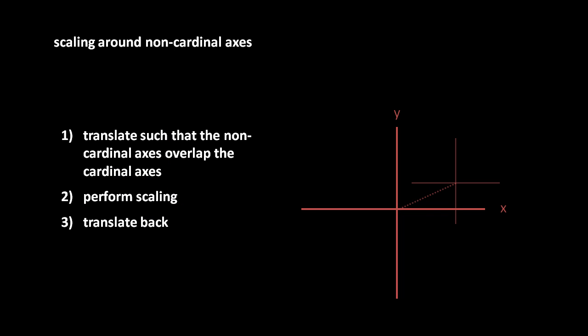Another thing we might wish to do is scale an object around axes other than the cardinal x and y axes of our coordinate system. To put it another way, we might want to stretch an object around a center point that doesn't lie on the origin. To accomplish this, we use the same trick we used to rotate an object around a pivot point other than the origin. We temporarily change the frame of reference by translating, then perform our operation before changing our frame of reference back.